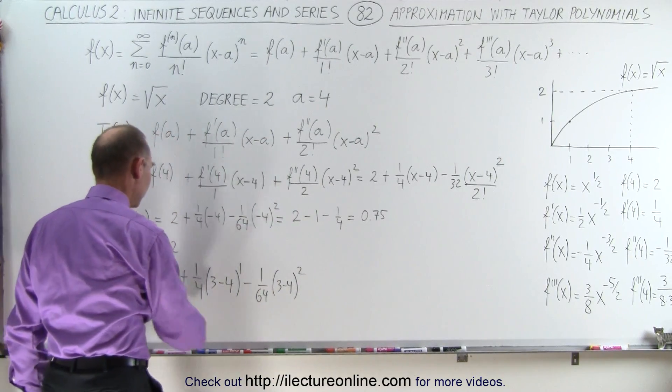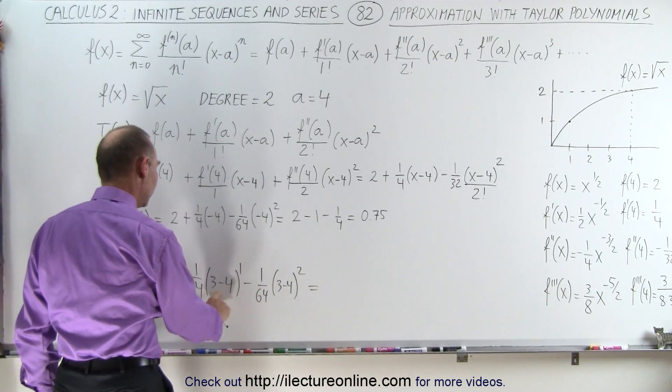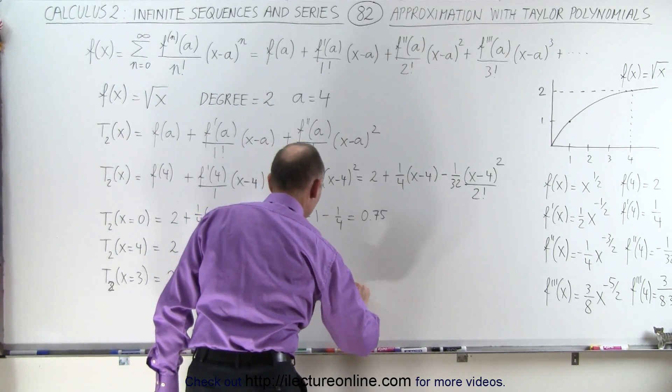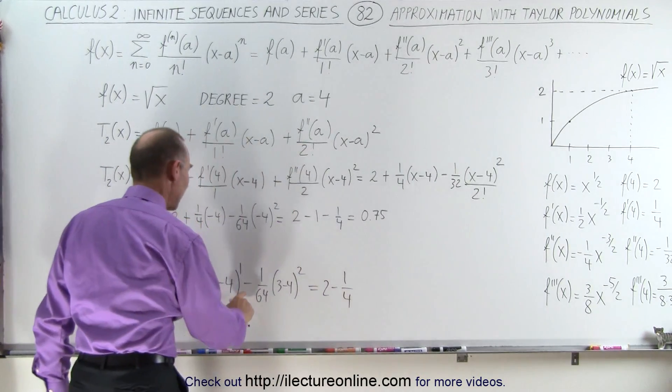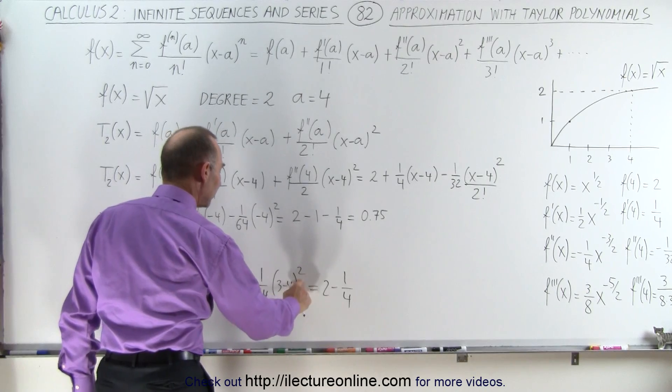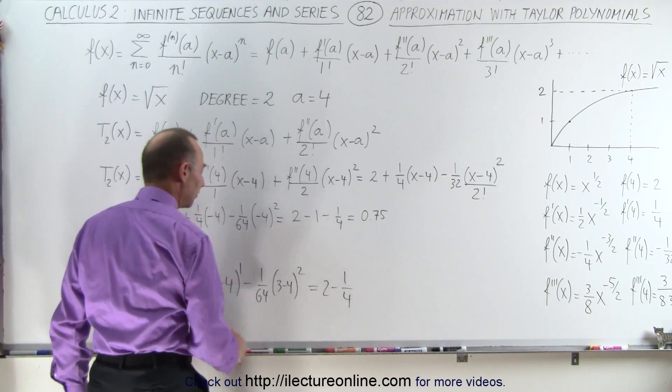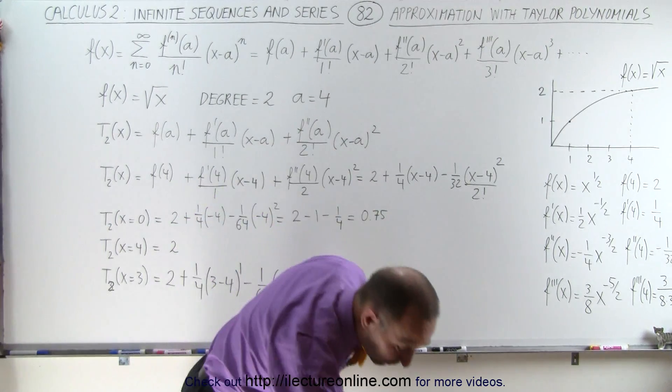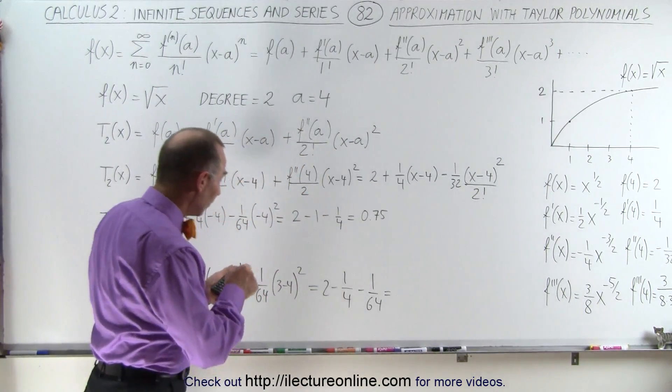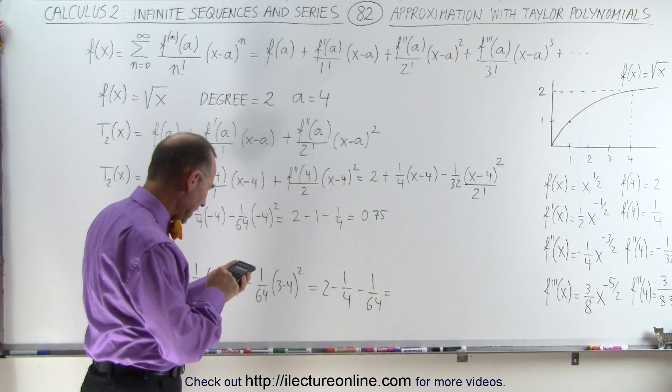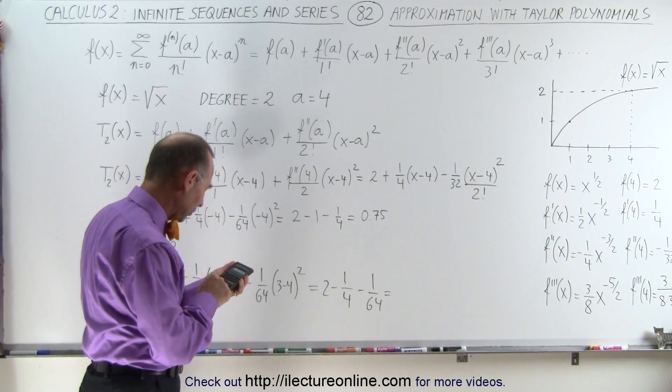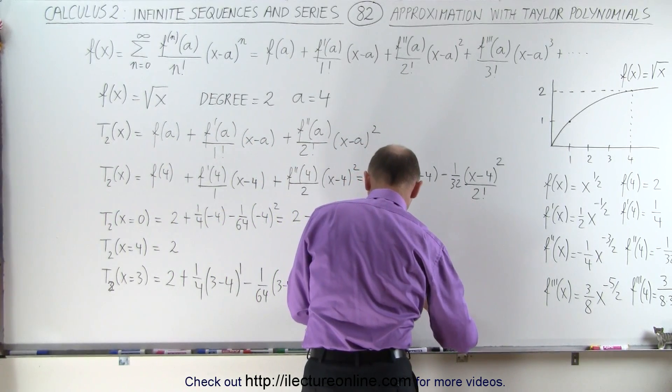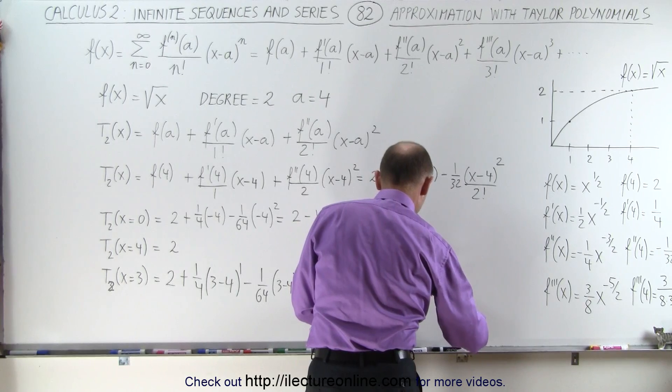Now, what you see here is we have, this is equal to 2, this is minus 1 raised to the first power, so minus 1 times 1 quarter, that's 2 minus 1 quarter. And here we have minus 1 to the second power, that's positive 1, but we still have a negative here, that's minus 1 over 64. So, let's go ahead with the calculator, figure out what that's equal to. So, we have 1.75 minus 1 divided by 64, and this converges to 1.734375.